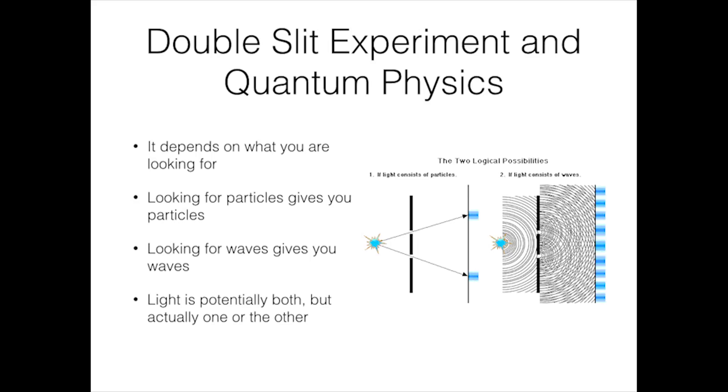If you are observing for particles, then you will find particle properties. Likewise, if you are observing for waves, you will find wave properties. This means that light is potentially both, but actually one or the other.